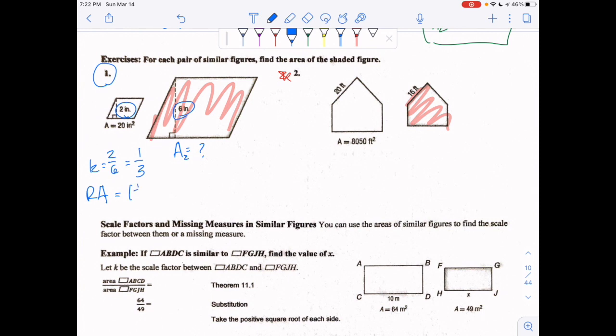Now to find your ratio of your area, take that 1/3 and square it: boom, 1/9. Now take that ratio of your area, set up a proportion going small to big: 20 over A₂. Cross multiply and A₂ equals 180 inches squared.